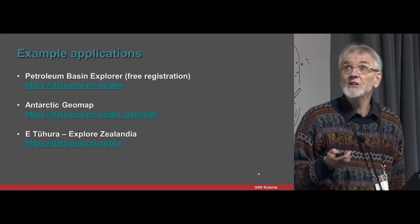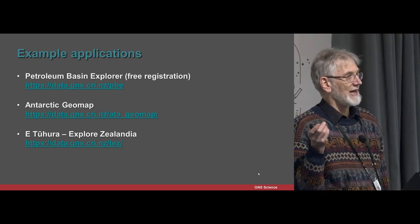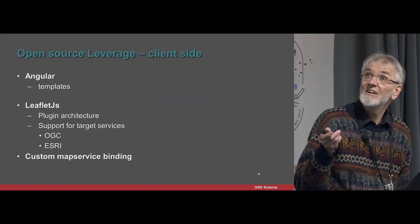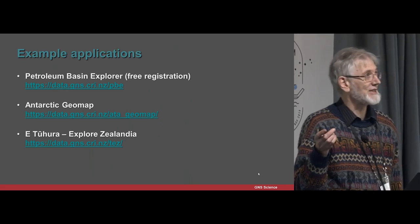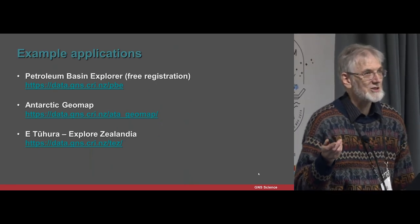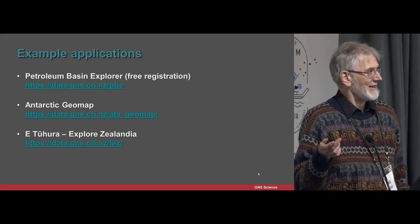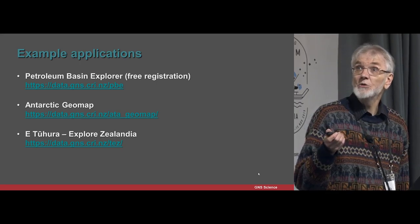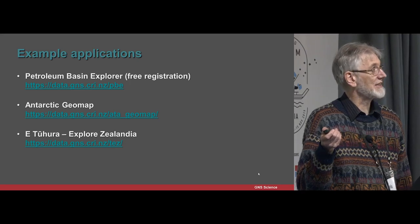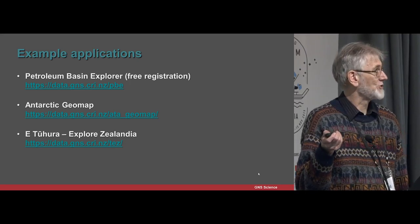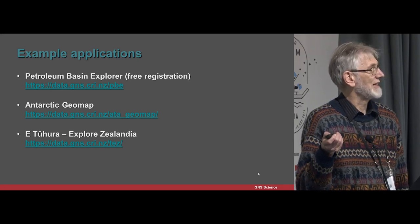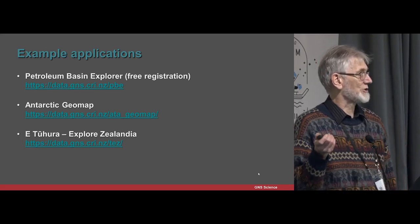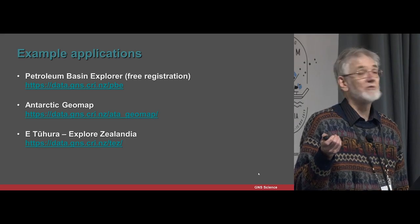We have quite a number of map applications, some of them public-facing. The most well-known is Petroleum Basin Explorer — tens of maps, many hundreds of layers, thousands of documents, but it's free registration to get into it. More recently we've got the Antarctic Geomap and the Zealandia map, which are both public. Almost all the data is basically public and readily available. Expect Zealandia to explode in the amount of data content over the next few years.